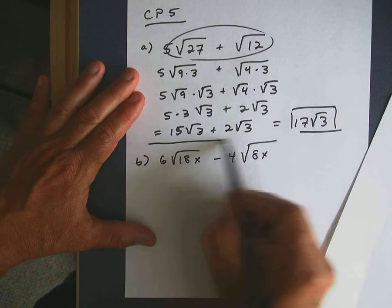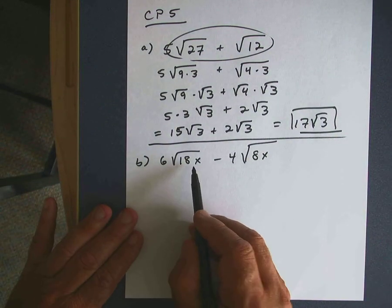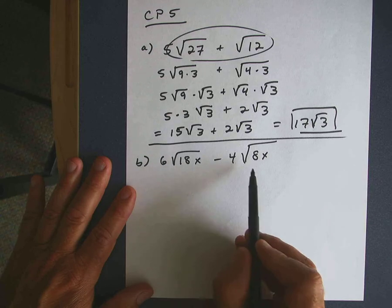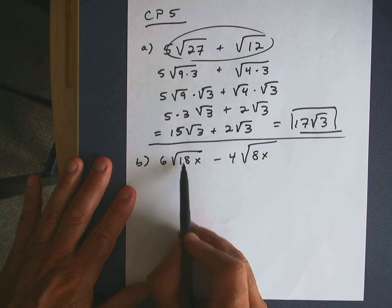Let's take another one to practice. Very similar. 6 times the square root of 18x minus 4 times the square root of 8x. Doesn't look like you can do much with that, but let's see if we can break these down. If you look at these individually, they're not simplified, because under the square root sign, there's something we can pull out.